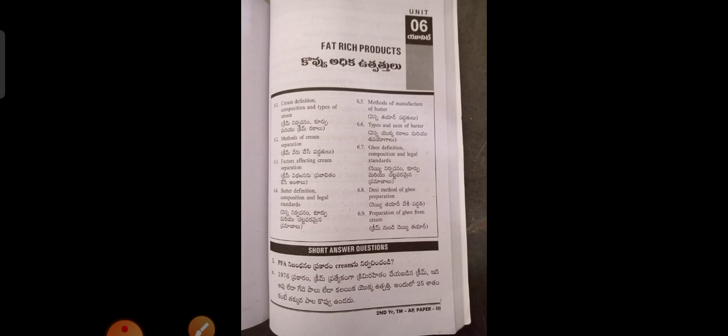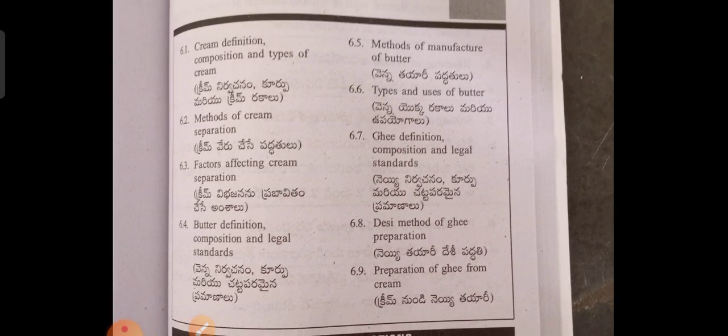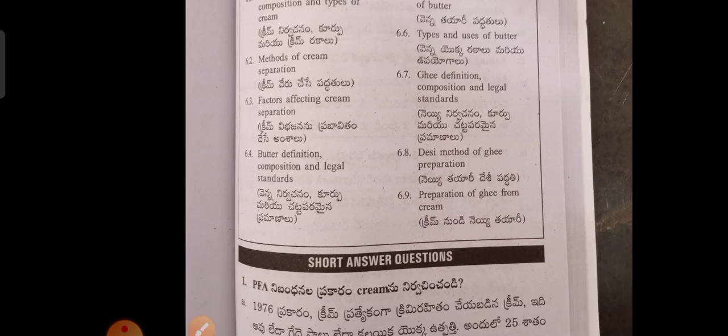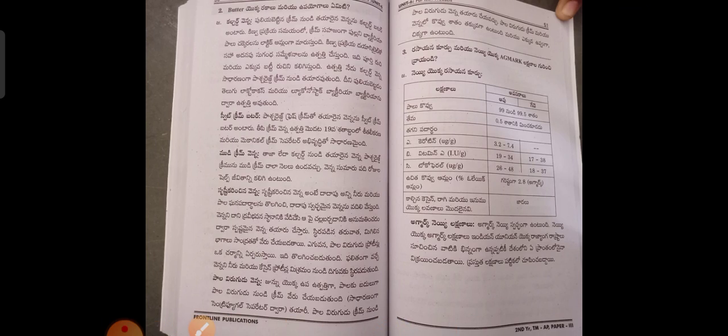Next, Unit 6: Fermented Products. There are 6 to 9 sub-topics in this unit covering various fermented dairy products.